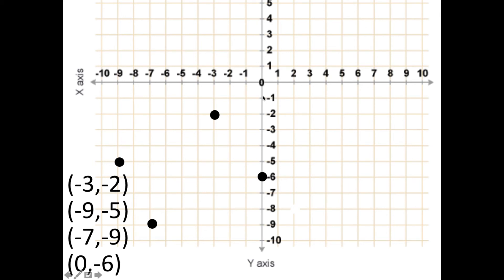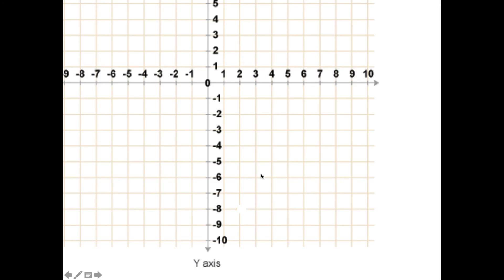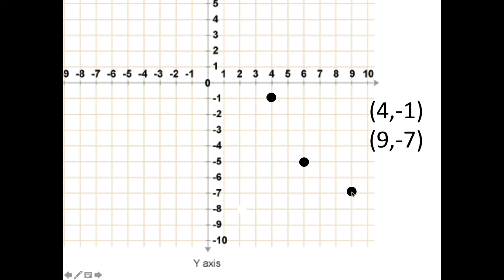Finally, in Quadrant 4 you go across the x-axis and down to the y. So we have (4, −1), (9, −7), (6, −5). And here we have (9, 0) — that's nine across the x-axis and zero down, so we haven't moved down the y at all.